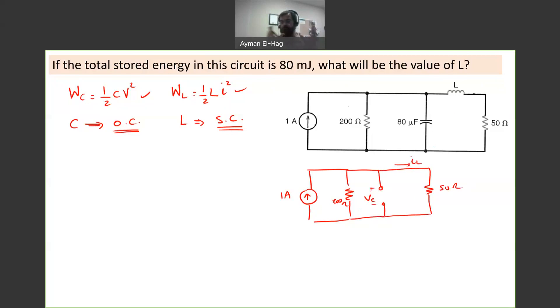Now my problem starts to become a little bit different. I want to find VC and IL, that is my focus now. We have a current source and you can see there are two resistors in parallel, the 200 ohm and the 50 ohm. So how to find IL? Very simple, we will use current dividing rules.